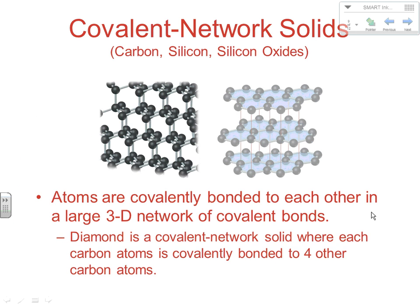The covalent network is strong because it's a 3D covalent network bonding in every single direction. Diamond is a good example — it's a covalent network solid. Carbon substances do this, as do silicon substances and silicon dioxide. These are relatively rare; if you see basically carbon, silicon, or silicon oxide, it's going to be covalent network — those are about the only instances you'll ever see. The intramolecular force exists in every direction, making it a very strong type of force.